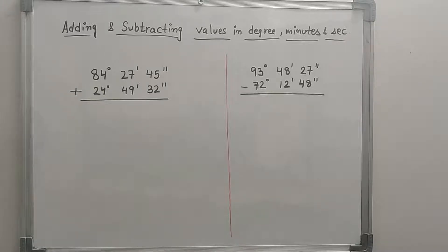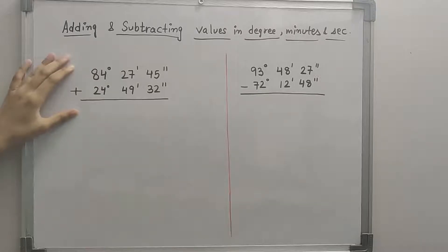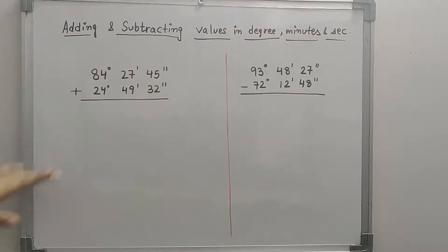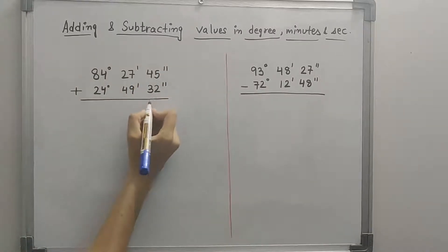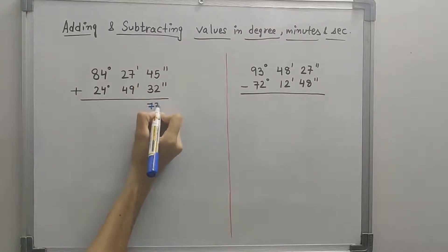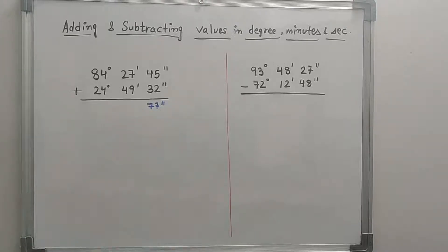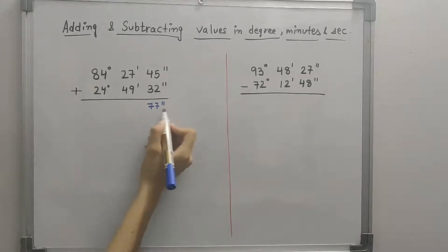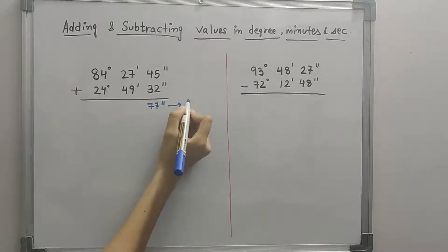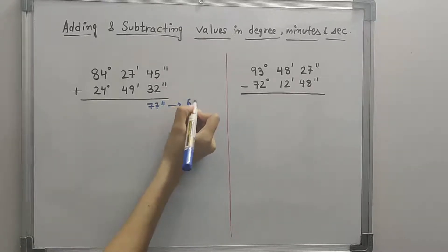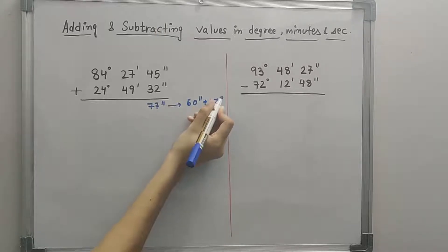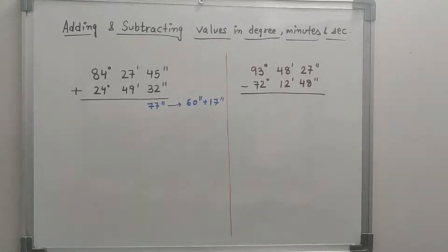Hello everyone. For this video I want to show you how to add and subtract values that are in degrees, minutes, and seconds. What we are going to do is add the values as they are. So if we add 45 seconds to 32 seconds we end up with 77 seconds. But we can't leave it like this, because 77 seconds is actually equal to 60 seconds plus 17 seconds.